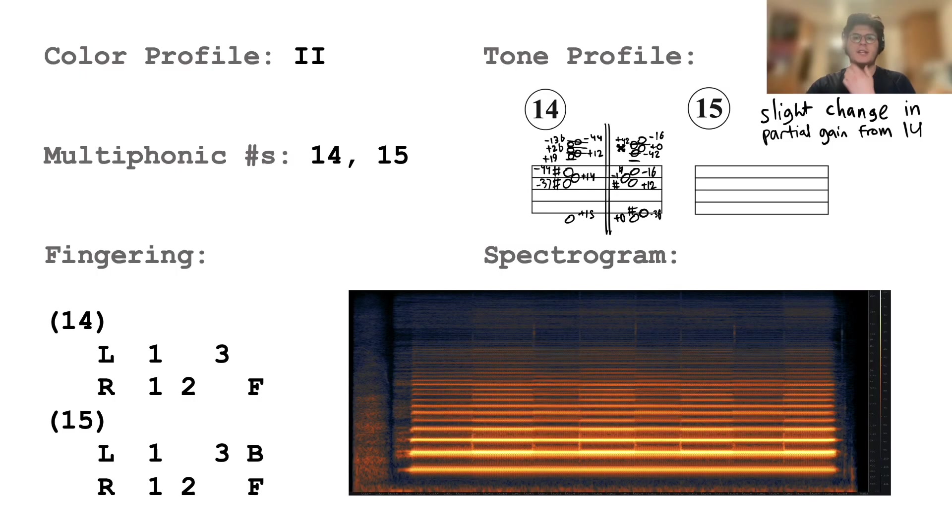This pairing, interestingly, doesn't toggle between partials but partial volumes. The performer described multiphonic 15 as causing a rattling sensation in his head, so my recommendation for composers is to use multiphonic 15 sparingly and simply for the effect of contrasting with multiphonic 14, which sounds the same pitch-wise anyway.